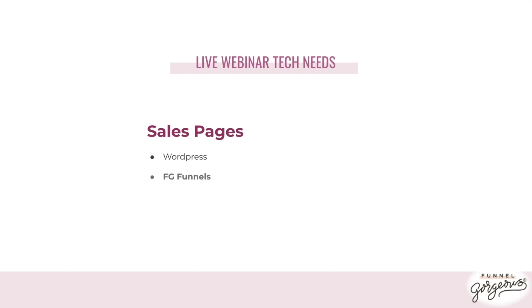FG Funnels is what we use and recommend. The big difference is that the email sign-up, broadcast, sales page, checkout, and even a membership site to deliver the content are all integrated in one place. Literally every single step is in FG Funnels — except the slides. You can also use Kartra, Kajabi, or ClickFunnels as your sales page, and when you get FG Funnels the webinar funnel is already set up for you for free.